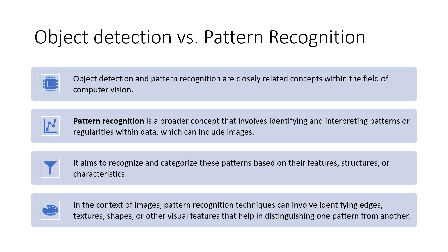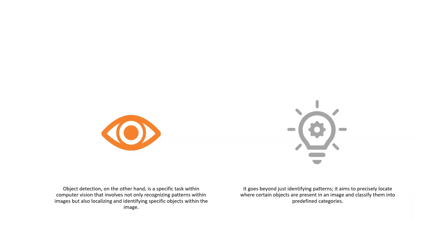A standard question that is always asked: are object detection and pattern recognition the same? No, they are closely related concepts, but we need to understand the differences. Pattern recognition is a broader concept — it involves identifying and interpreting patterns or regularities within data, which can include images. It aims to recognize and categorize patterns based on features, structures, or characteristics. When it comes to images, pattern recognition is about identifying edges, textures, shapes, and other visual features that help in distinguishing one pattern from another. Object detection, on the other hand, is a task within computer vision that not only recognizes patterns within images but also has to locate and identify specific objects within the image.